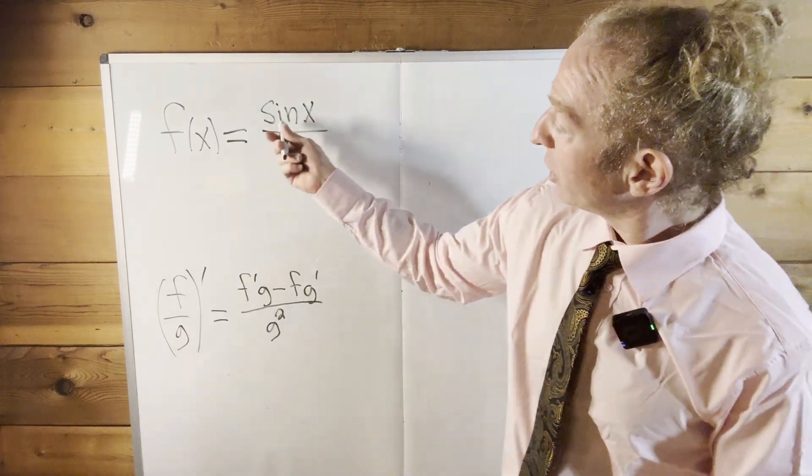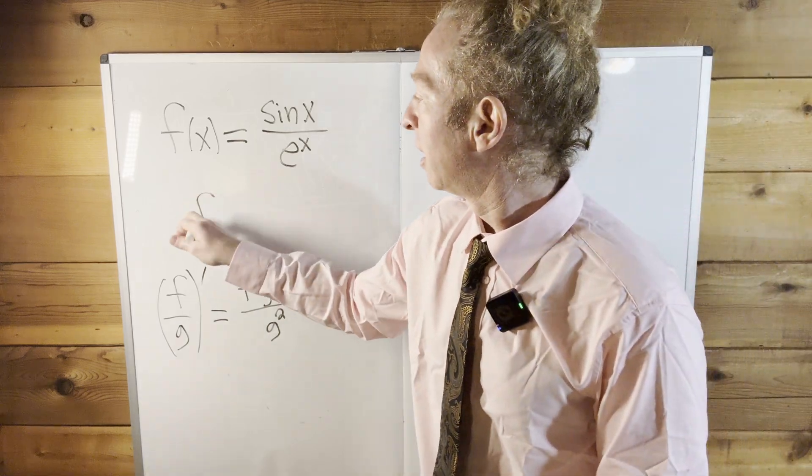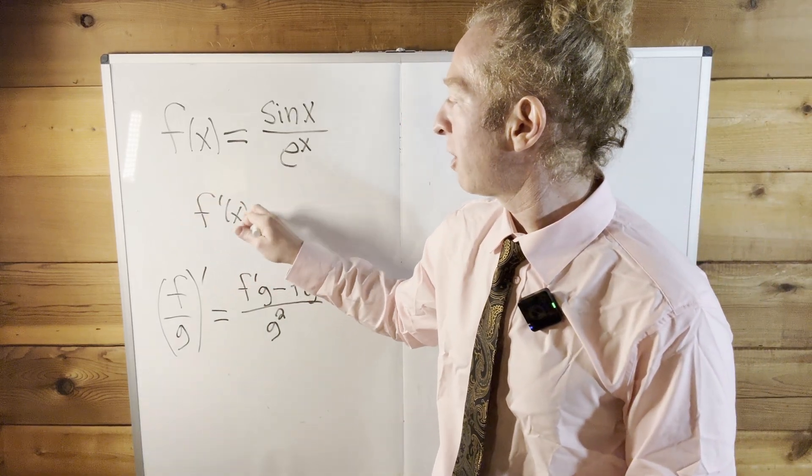So in this particular case, the top is sine x and the bottom is e to the x. So applying the quotient rule to our example,